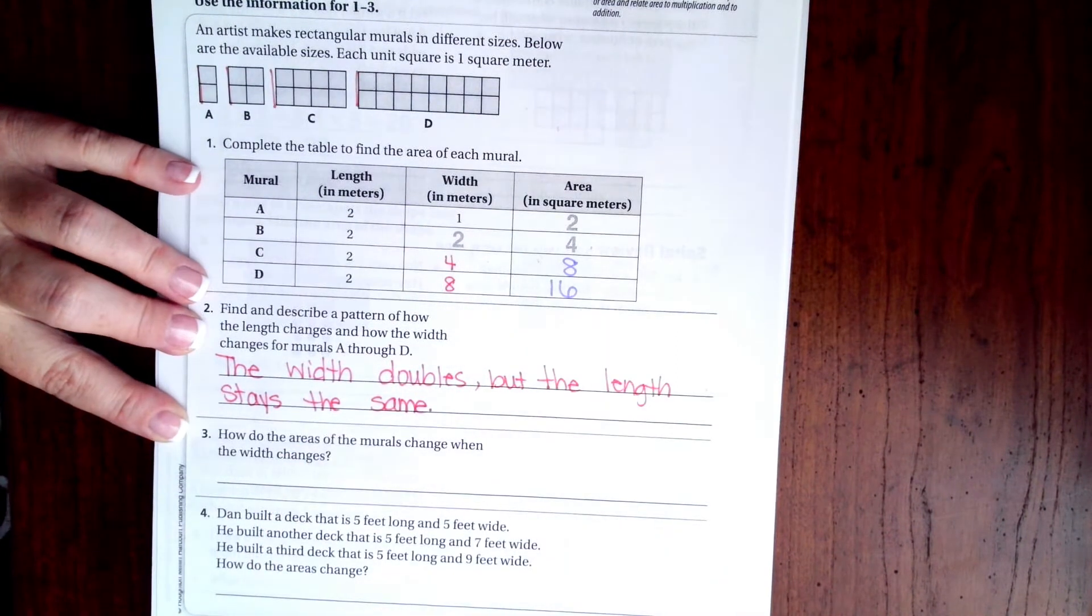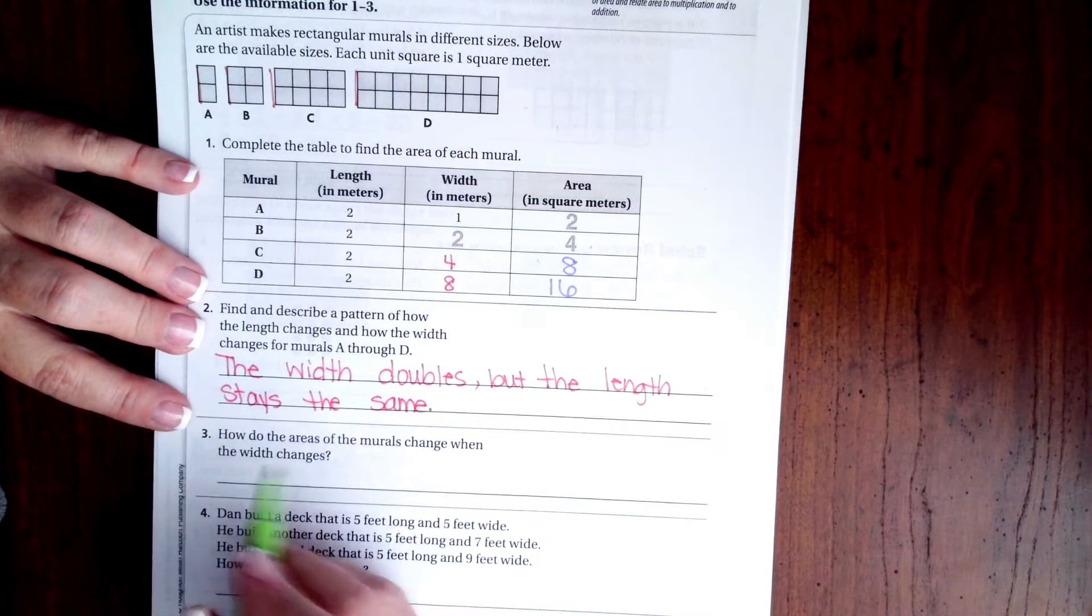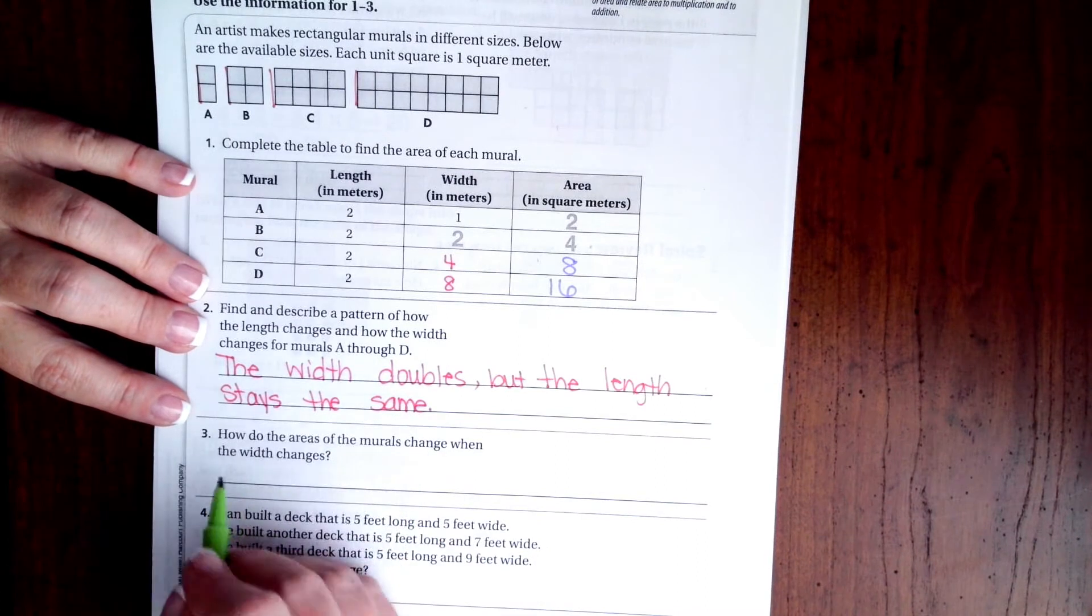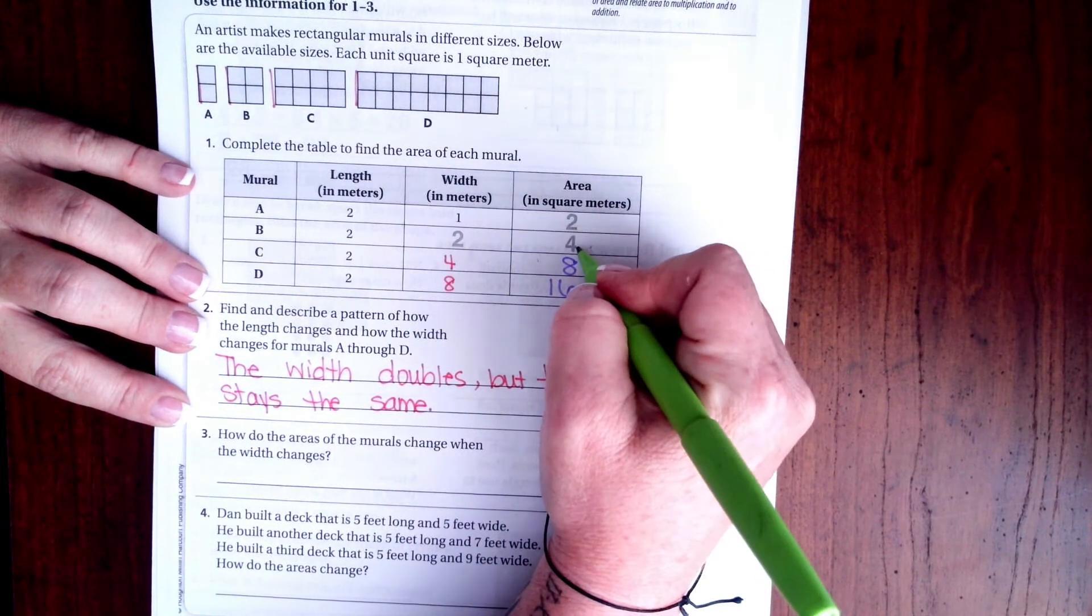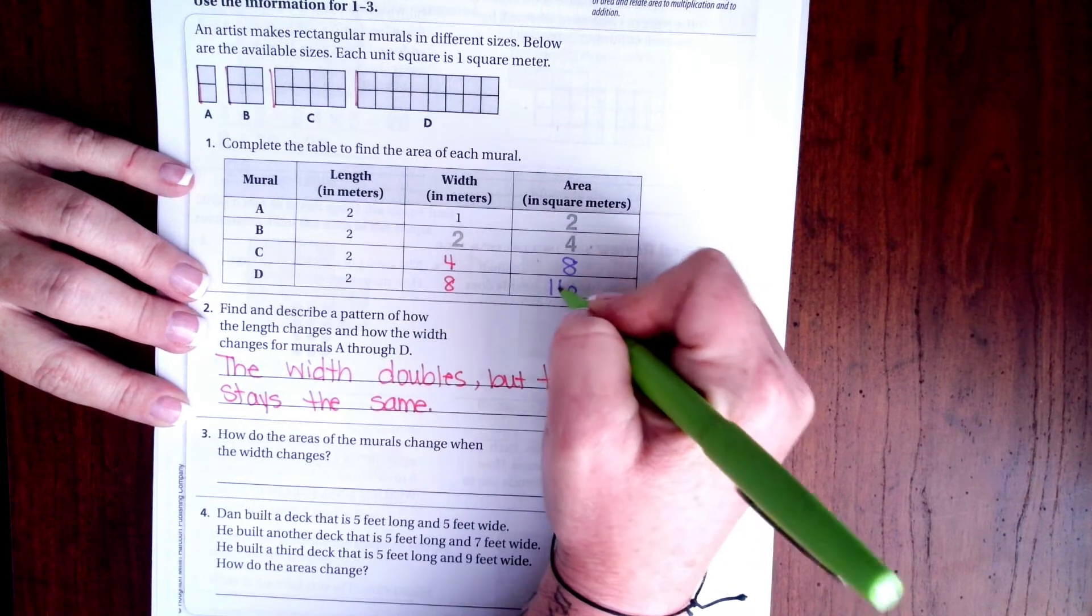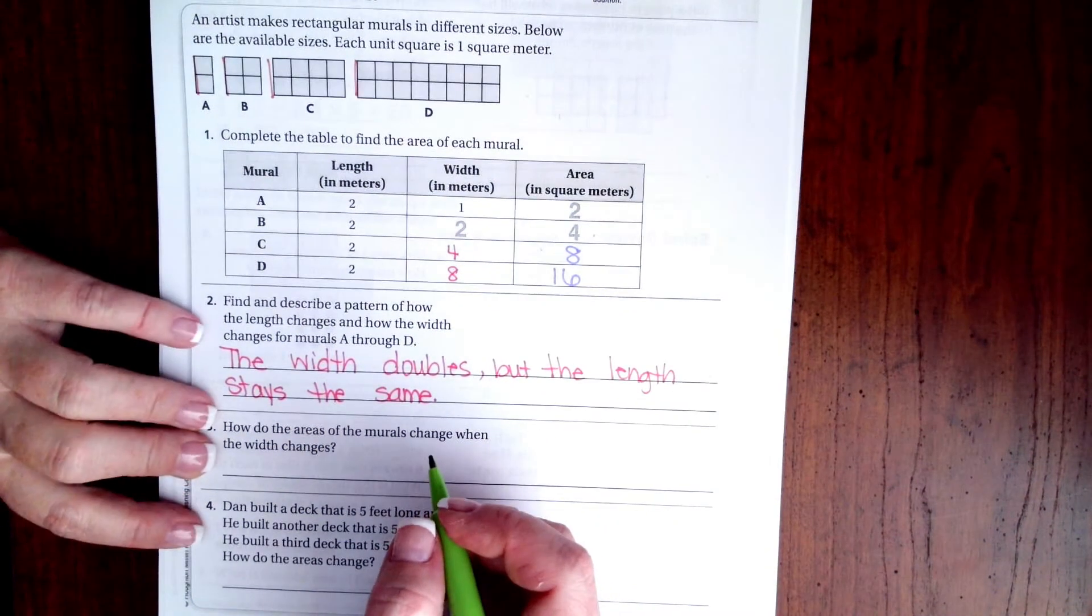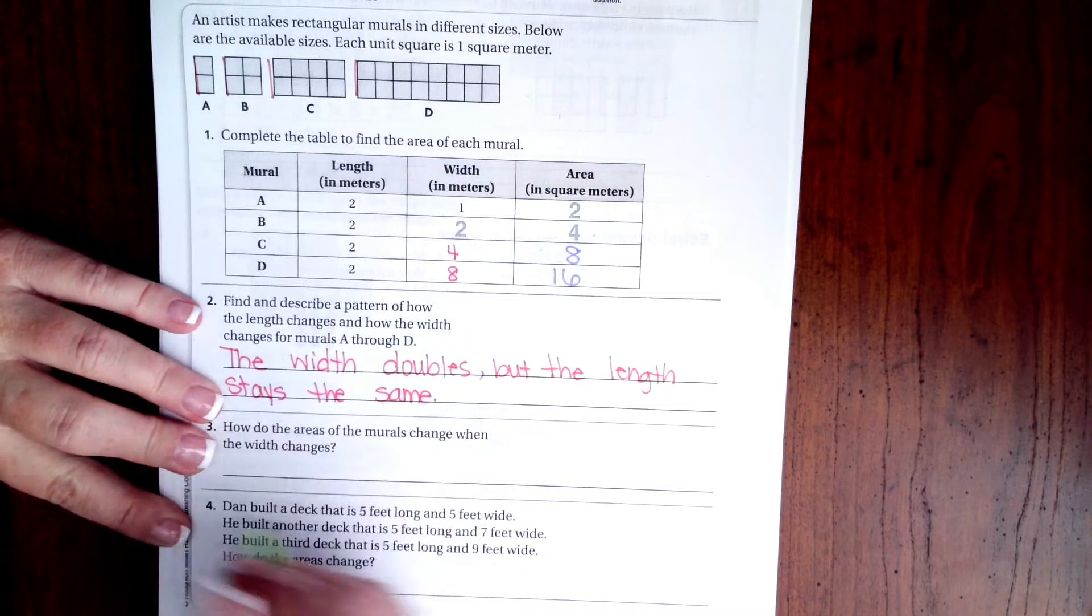How do the areas of the murals change when the width changes? Well they're doubling. Two times two is four, four times two is eight, eight times two is sixteen. So the area is also doubling.